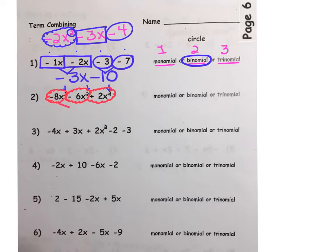A loss of 8 and a loss of 6x squared gives us a negative 14x squared plus 2x squared. We'll then combine the negative 14x squared with the gain of 2x squared. We get negative 12x squared. Once all the terms have been combined, we get one single term, making this a monomial.